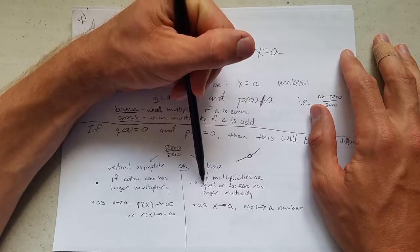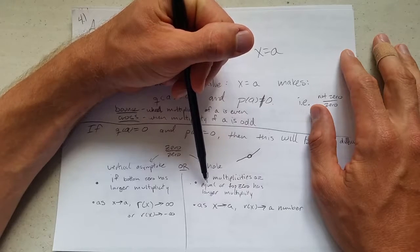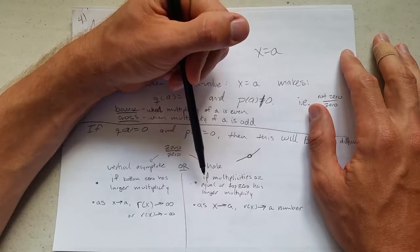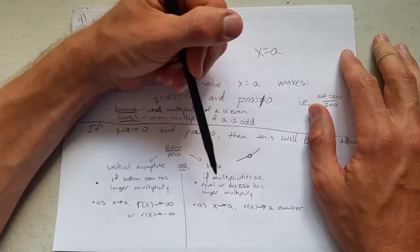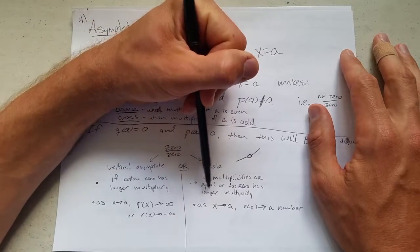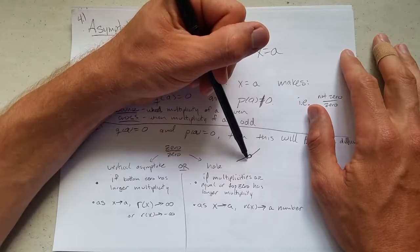How does a hole happen? If the multiplicities are equal, so top 0 and bottom 0 have the same multiplicity. Also, if the top 0 has a larger multiplicity, you'll have a hole. If the top 0 has a larger multiplicity, your hole, the y value of the hole will also be 0.